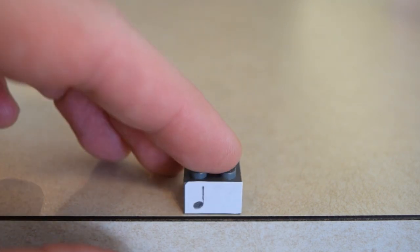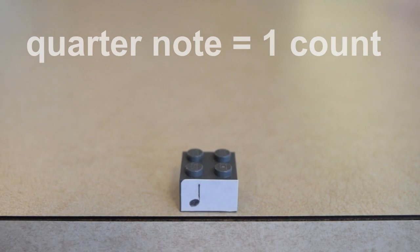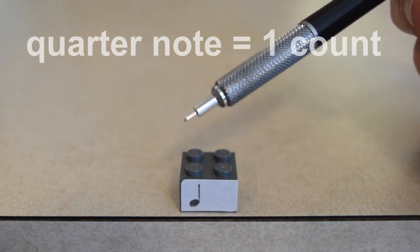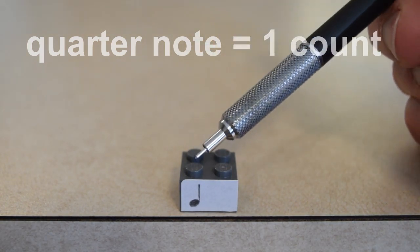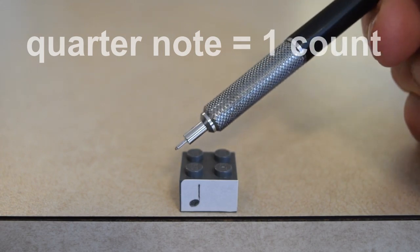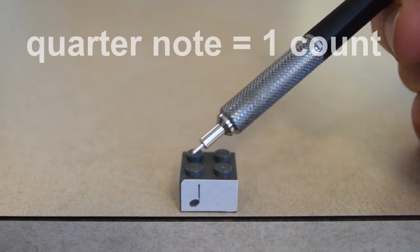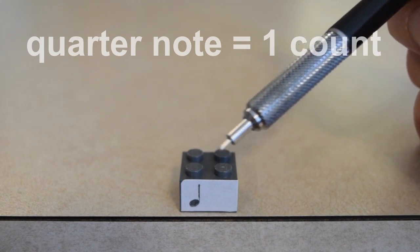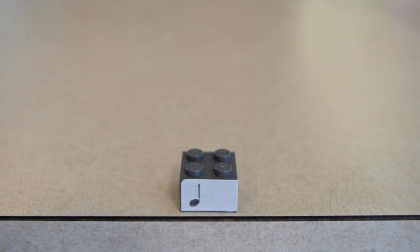We're going to start with our basic building block that we started off with in our Essential Elements book with the quarter note. The quarter note for today's lesson is going to be represented by this 2x2. It really doesn't matter how deep it goes, it only matters that we're going left to right, so this is going to be two dots wide for our quarter note, and I'll explain to you why we're doing that later.